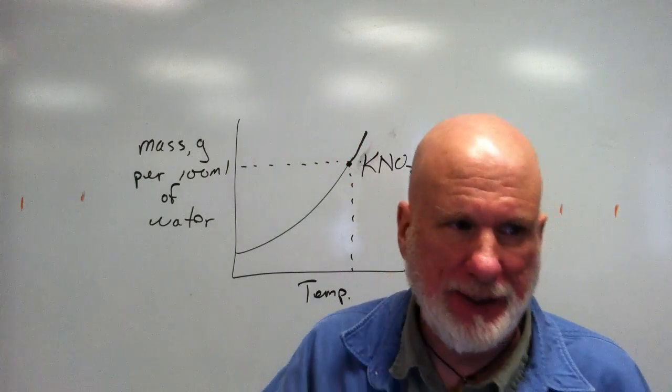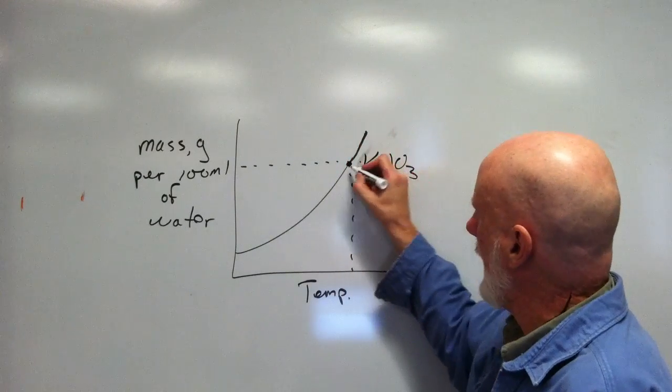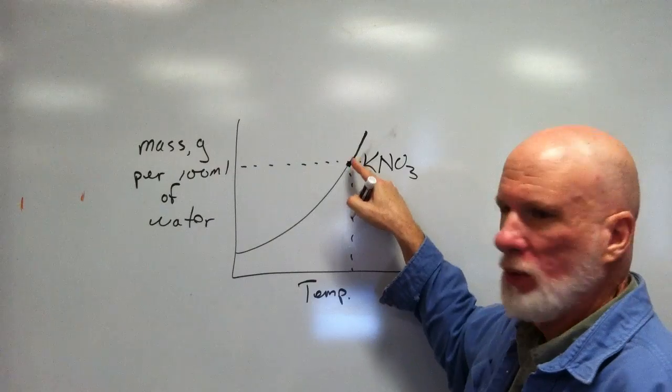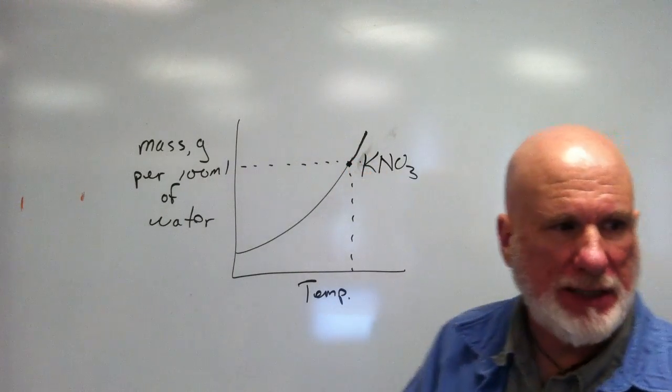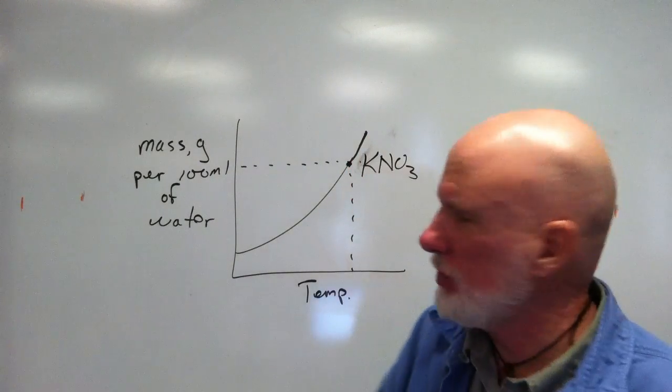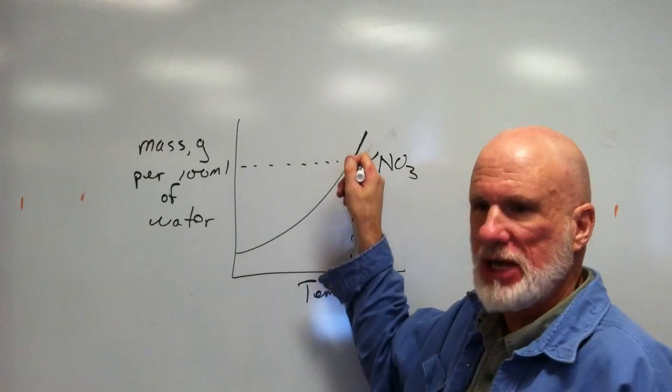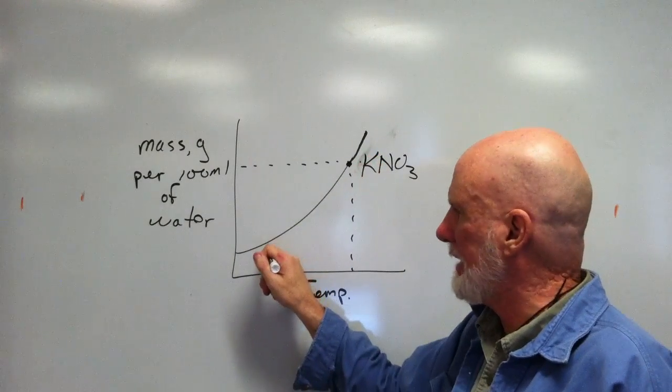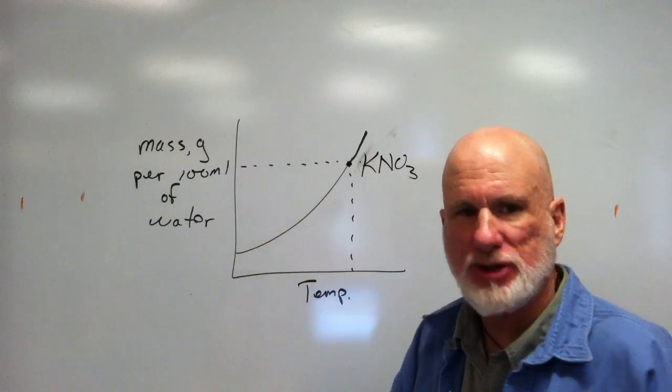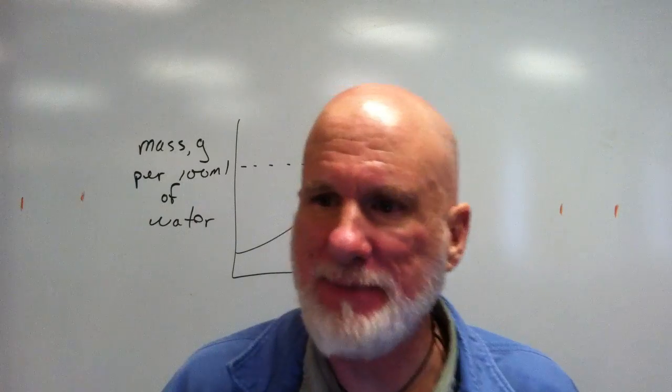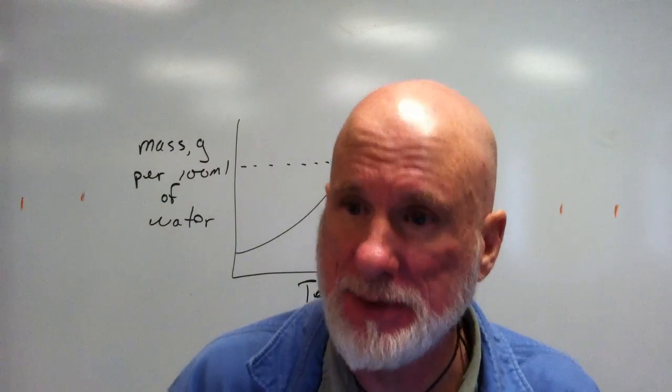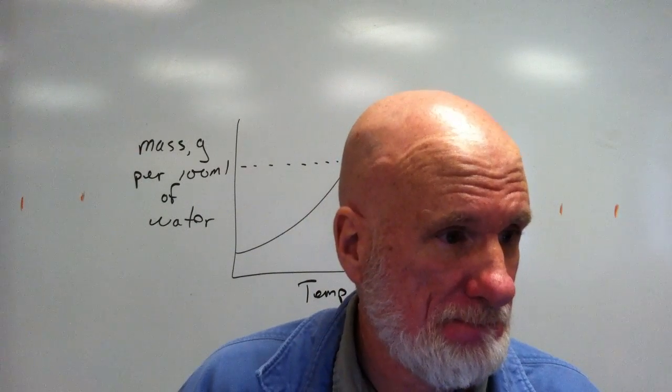So what happens if I have a solution with a lot of potassium nitrate dissolved in it, and then I cool the solution? What happens to the solute that was dissolved up here when I get down to the temperature here? What happens to the solute, the potassium nitrate that was dissolved?